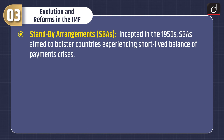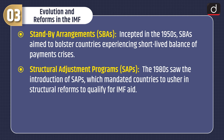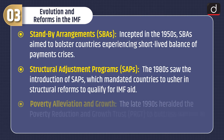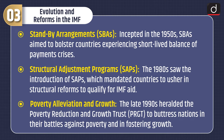Now let's discuss about evolution and reforms in the IMF. Stand-By Arrangements, incepted in the 1950s, aimed to bolster countries experiencing short-lived balance of payments crises. Structural Adjustment Programs, or SAPs, introduced in the 1980s, mandated countries to usher in structural reforms to qualify for IMF aid. In the late 1990s, the Poverty Reduction and Growth Trust was introduced to support nations in their battles against poverty and in fostering growth.